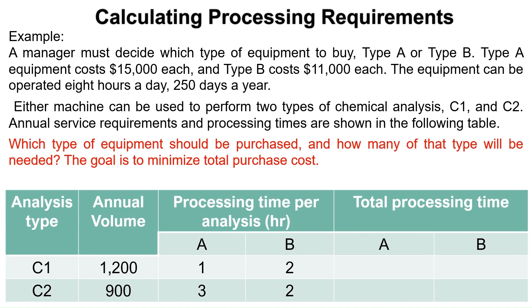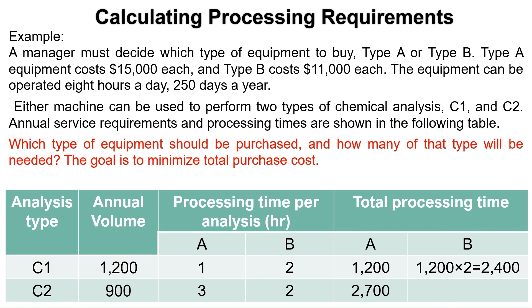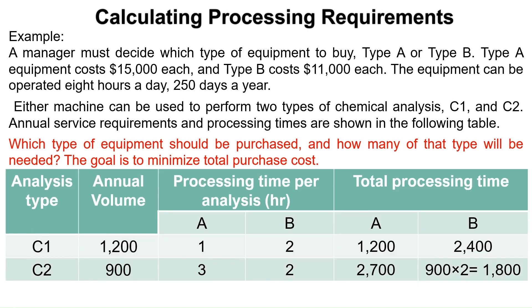Calculate the total processing time of each analysis type needed by each type of equipment by multiplying the annual volume by the processing time per analysis. For analysis C1 with equipment A, the total processing time equals 1,200 times 1 equal 1,200. For analysis C2 with equipment A, it equals 900 times 3 equal 2,700. For analysis C1 with equipment B, it equals 1,200 times 2 equal 2,400. For analysis C2 with equipment B, it equals 900 times 2 equal 1,800.